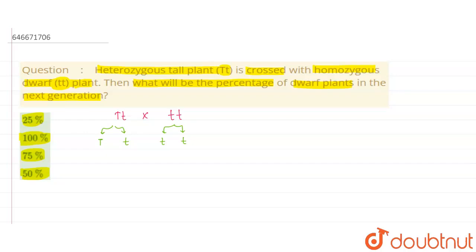So now in the Punnett square we will check the crossing of these. Here comes the Punnett square. Here on one side we will take capital T small t and on the other side small t small t. So here we can say that capital T small t, capital T small t, here small t small t, and here also small t small t.